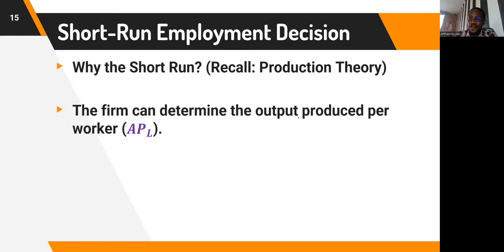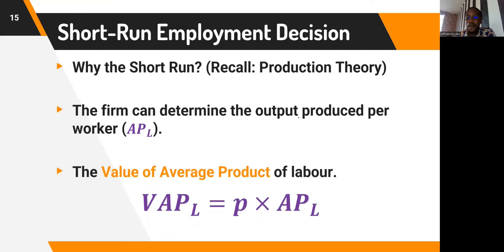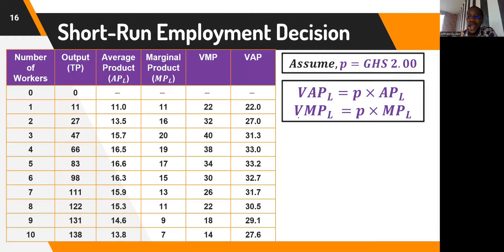Just as we calculate the value of marginal product of labor, the firm can also determine the average product per worker — the output per worker — which is the average product of labor. To get the value of average product of labor (VAP), we multiply price by the average product of labor. We extend our table with two columns for VMP and VAP, assuming the price of output is 2 Ghana Cedis.